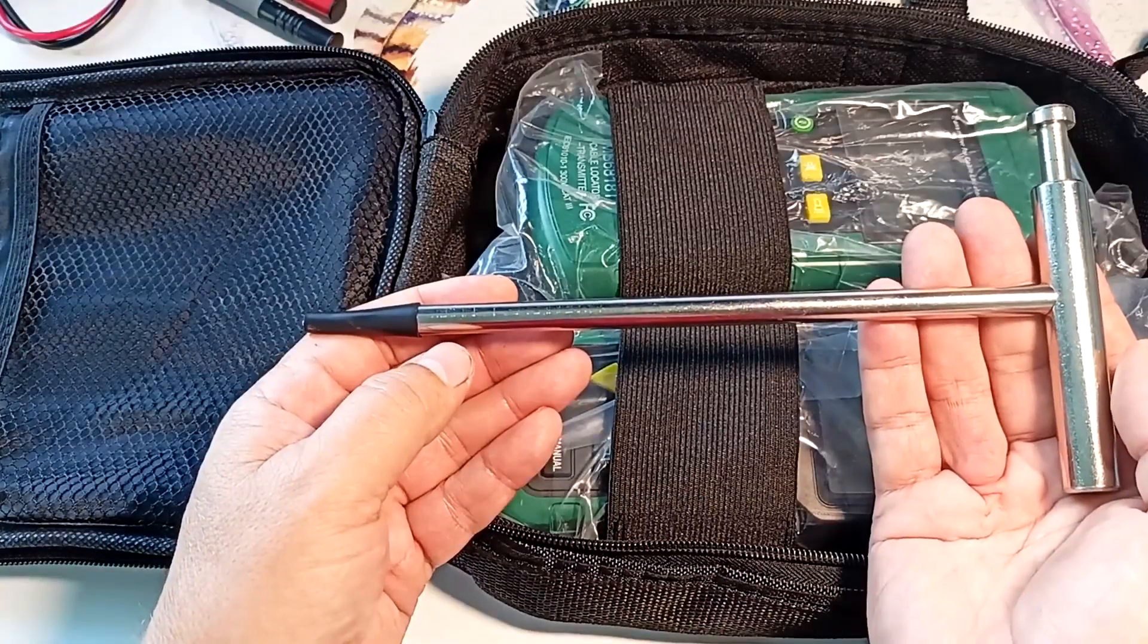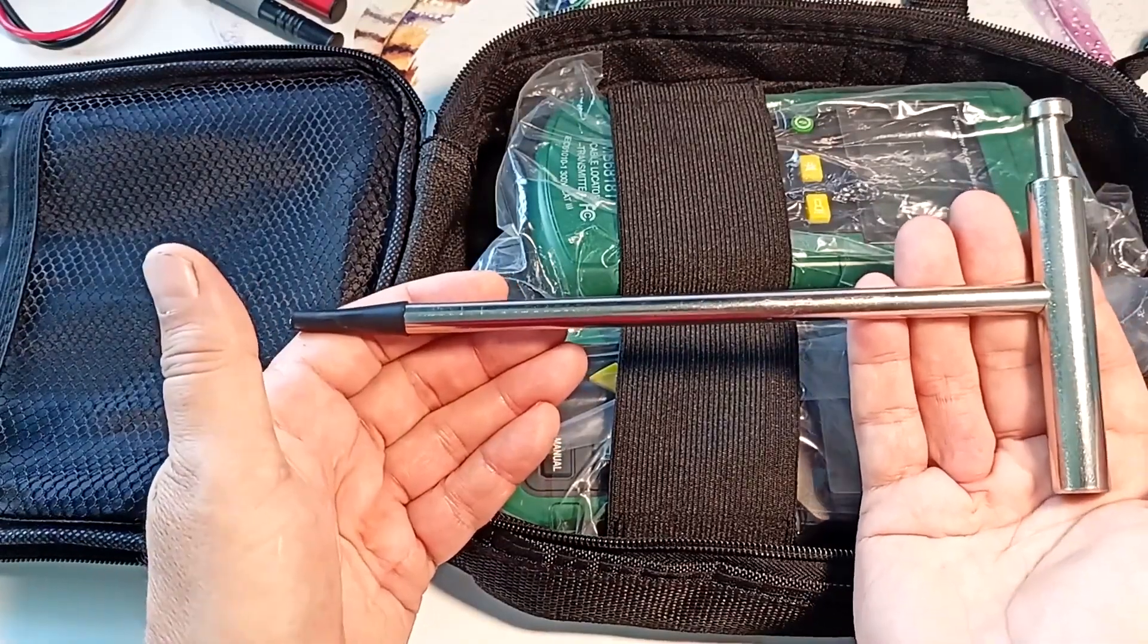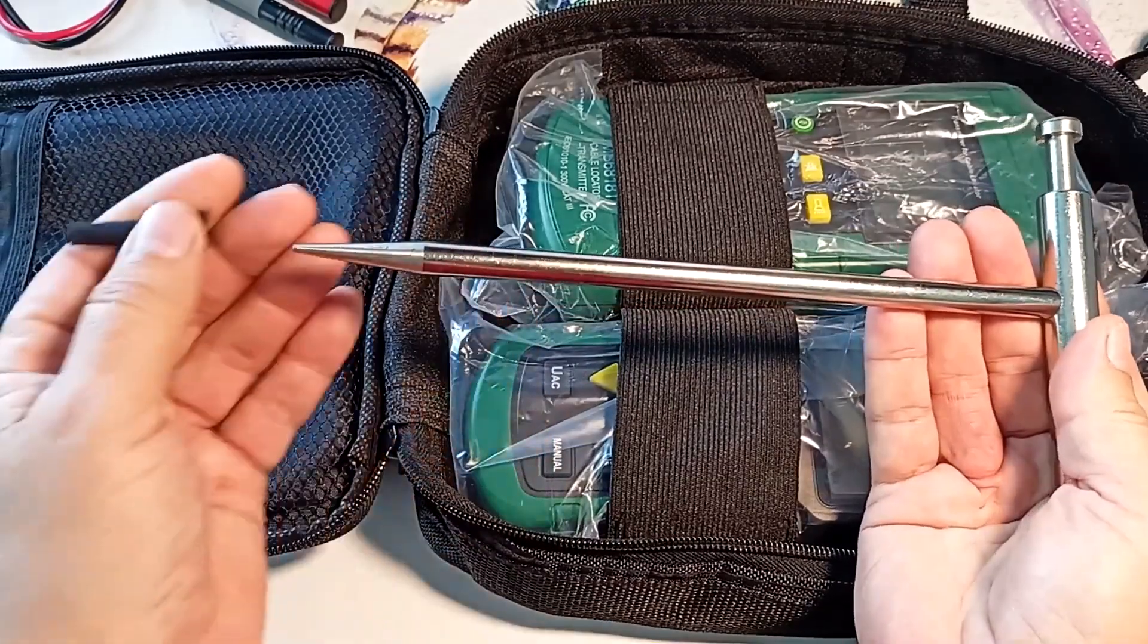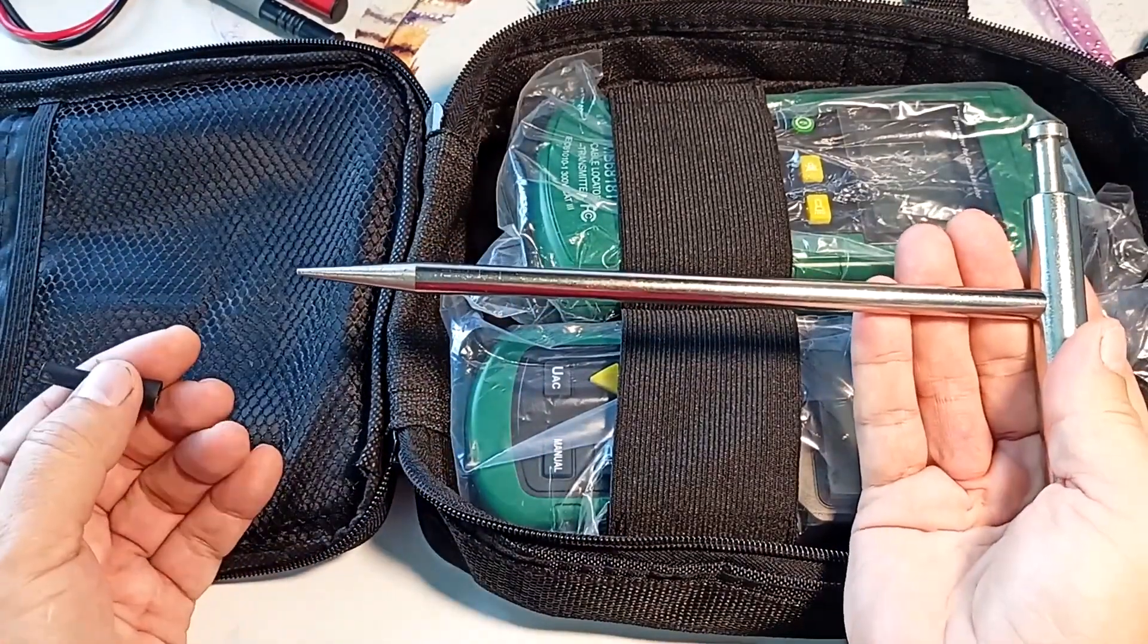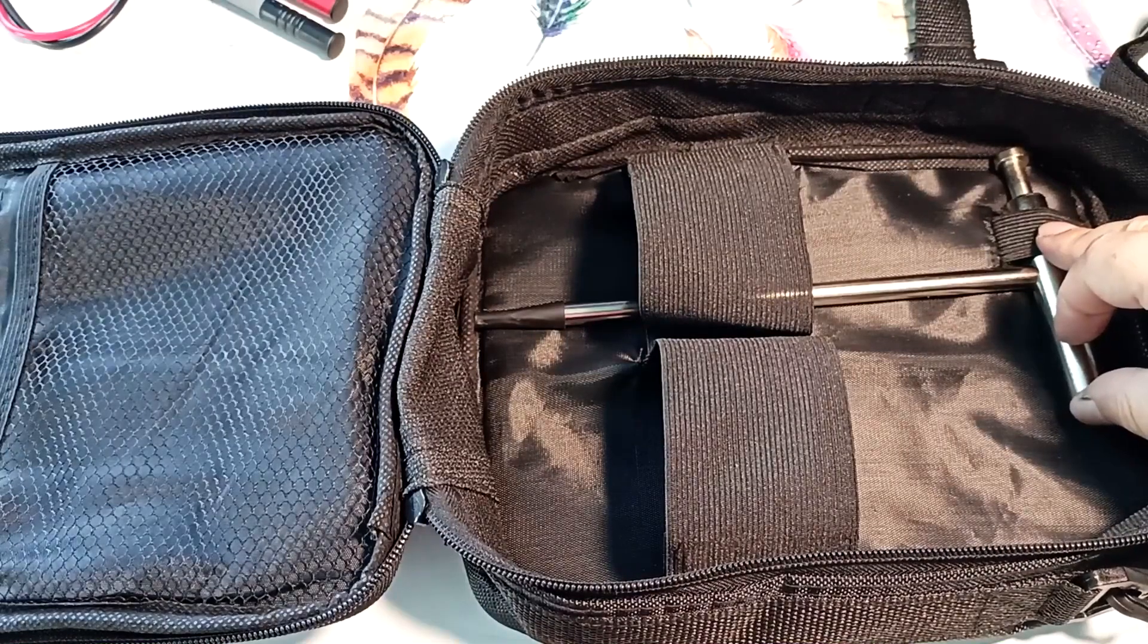The kit includes a grounding rod for locating underground wiring. Good chromed iron. There is a protective cap to prevent the pin from piercing the bag. There is also a loop in the bag that holds the ground electrode.